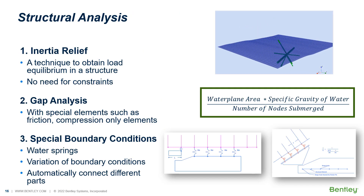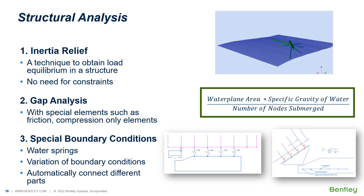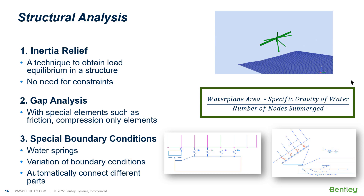After computation of applied load cases, we need to perform structural analysis. The structural solver of MOSES has many unique features for floating structures. The first feature is inertial relief. We need to fix a structure to prevent rigid body motions, but floaters are not fixed in space, so giving a fake fixity for equilibrium could yield conservative results. Inertial relief tackles this issue by achieving equilibrium by applying counter forces to the individual beams in the opposite direction of the applied forces.